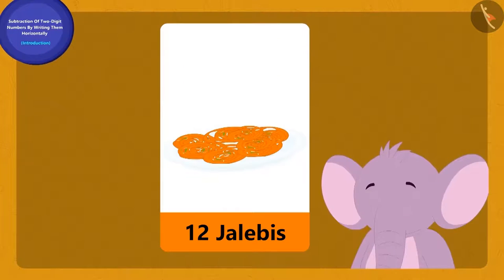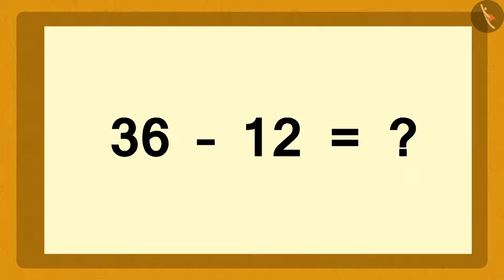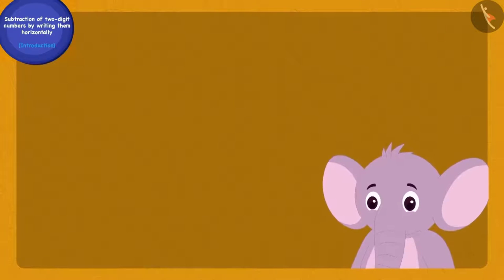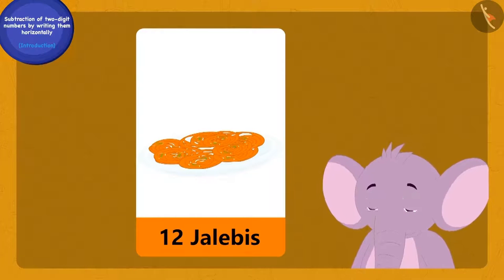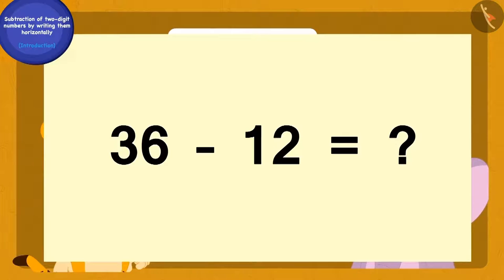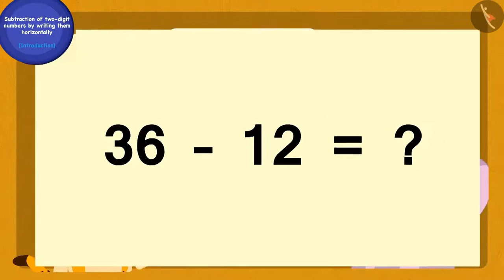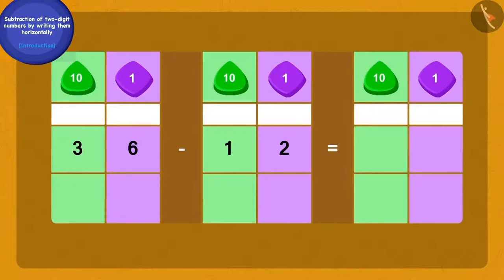Then Sher Khan bought some jalebis from him and now Appu has only 12 jalebis left. Bablu wrote the question on paper and asked Raju: Appu had 36 jalebis earlier, now he has 12 jalebis. We have to find out how many jalebis Sher Khan bought from Appu. Children, can you answer Bablu's question? Let us do this together.